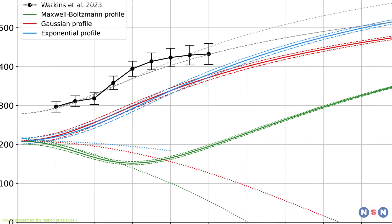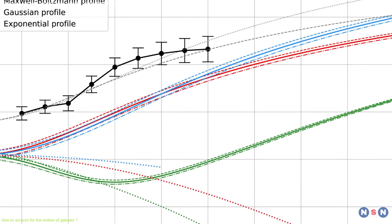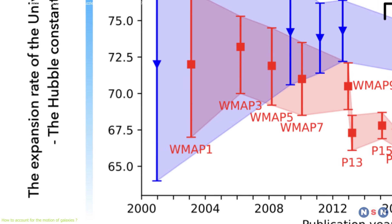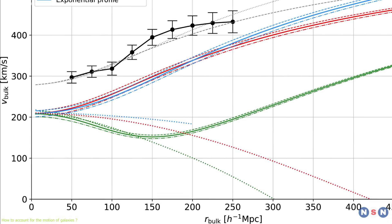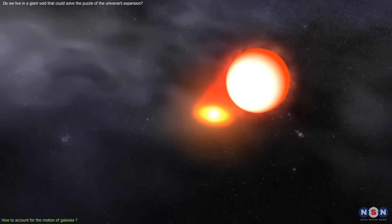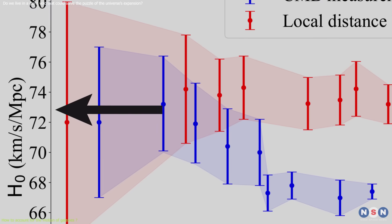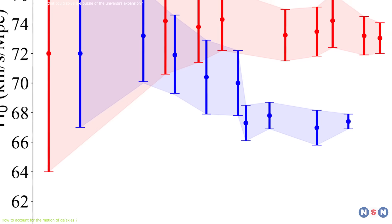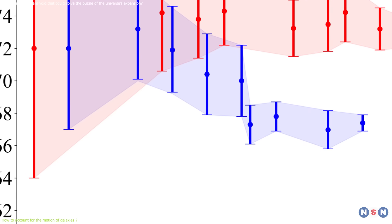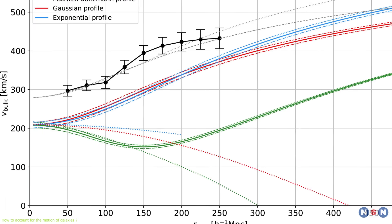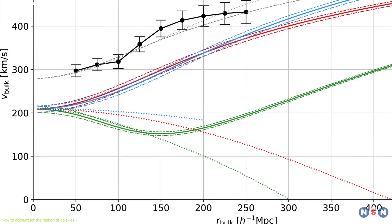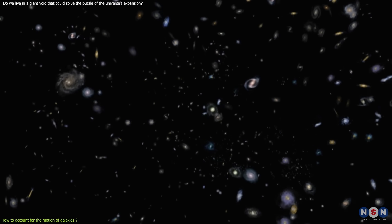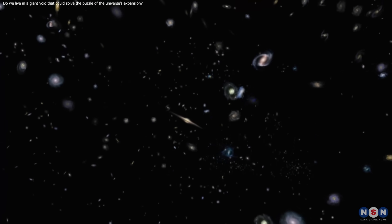The authors used a Bayesian model to account for the bulk flow in the supernova data, and they found that this reduced the Hubble tension significantly. By correcting for the bulk flow, the Hubble constant from the supernova method decreased from 74 to 69 km per second per megaparsec, which is much closer to the value from the CMB method. This means that the bulk flow is a major source of the Hubble tension, and that by accounting for it, we can reconcile the different methods of measuring the expansion rate of the universe.